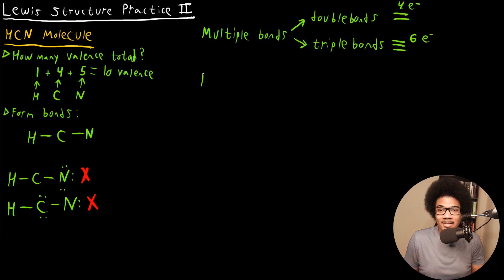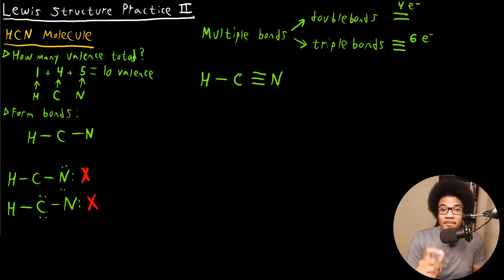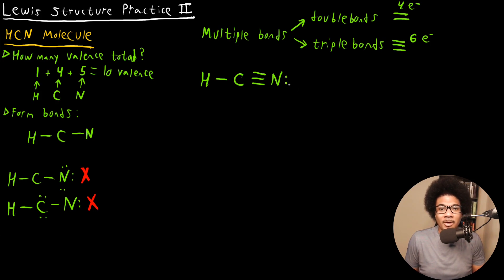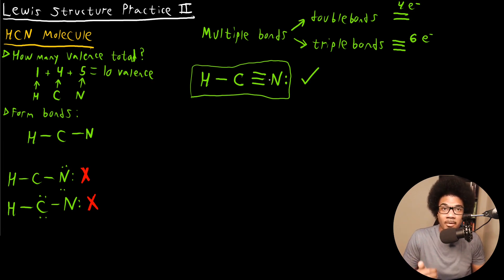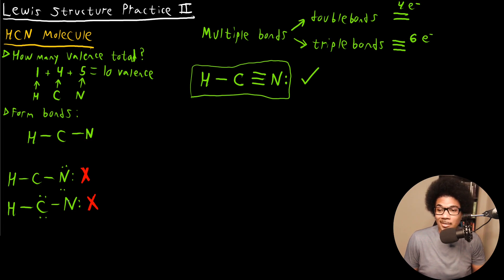Using multiple bonds, we can fill these octets easily. Starting with the same general framework, I'm going to triple bond carbon to nitrogen. When I do that, carbon's octet is filled. We've accounted for two, four, six, eight electrons, so we only have two more — and those two electrons go to nitrogen as a lone pair to fill its octet. Now we have an accurate Lewis structure for HCN. As you do more examples, you'll notice patterns of atoms that form double or triple bonds.